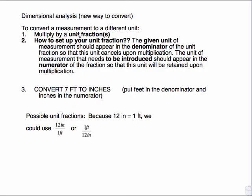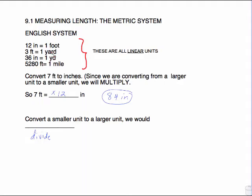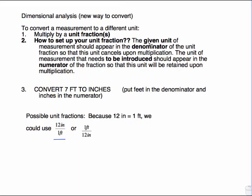To convert a measurement to a different unit, whether it's metric or English, you will multiply by a unit fraction. A unit fraction is a fraction that has the conversion factors together in a fraction. 12 inches is one foot. 12 inches over one foot is the same as one foot over 12 inches. I will use one or the other if I'm going to do this 7 feet to inches.